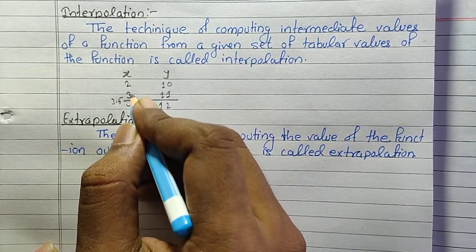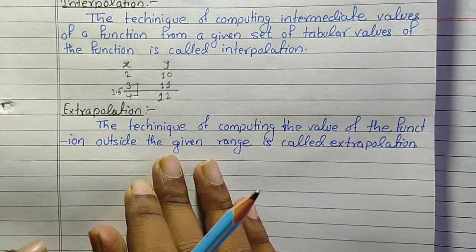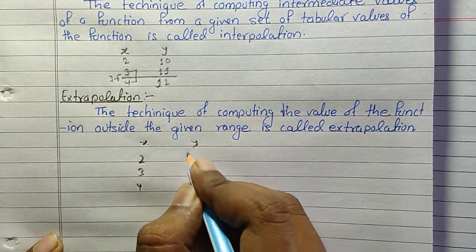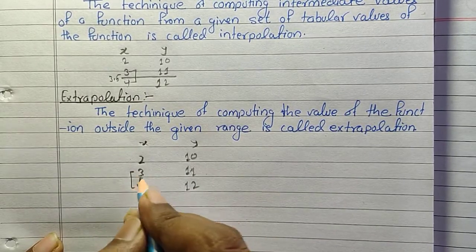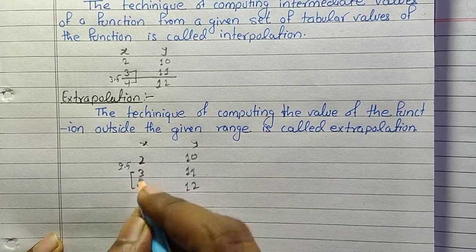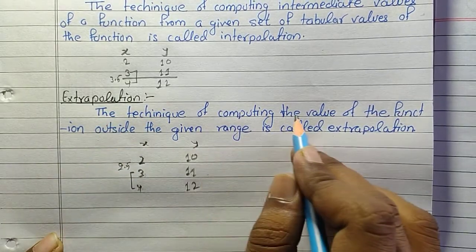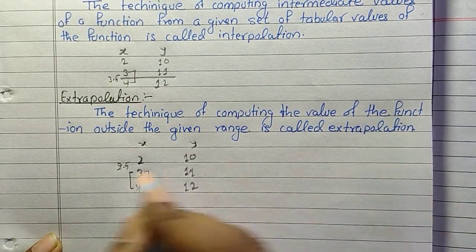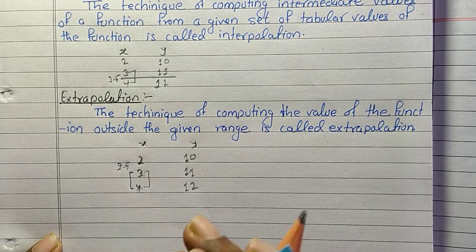We are asked to find the value between the range of 3 and 4 — this is interpolation. For extrapolation, taking the same example where x is 2, 3, 4 and y is 10, 11, 12: if we are asked to find the value outside the range, away from 3 and 4, then this method is called extrapolation. The definition of extrapolation is the technique of computing the value of the function outside the given range.